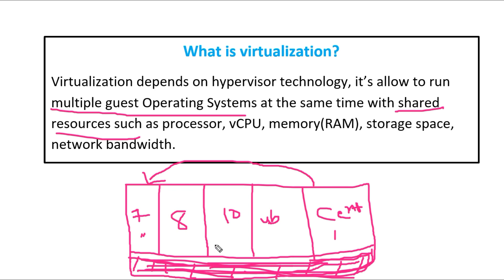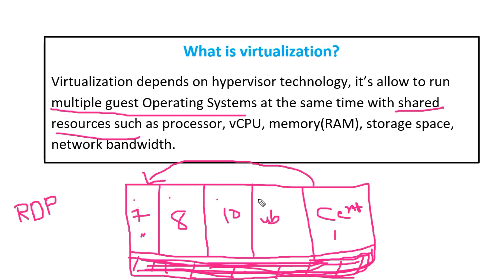We have a remote system. We can use RDP — Remote Desktop Protocol — and we have a separate IP address for each system.